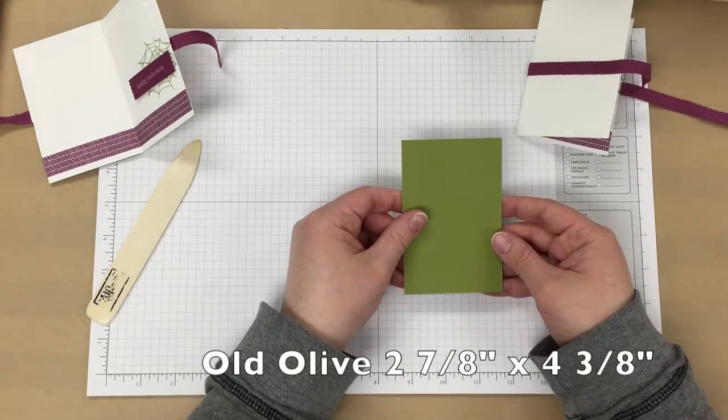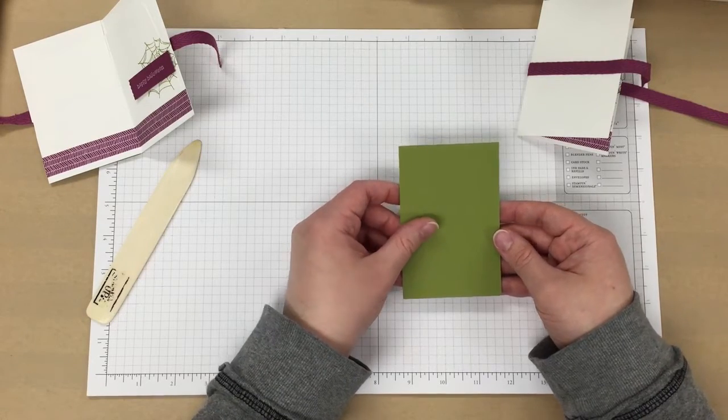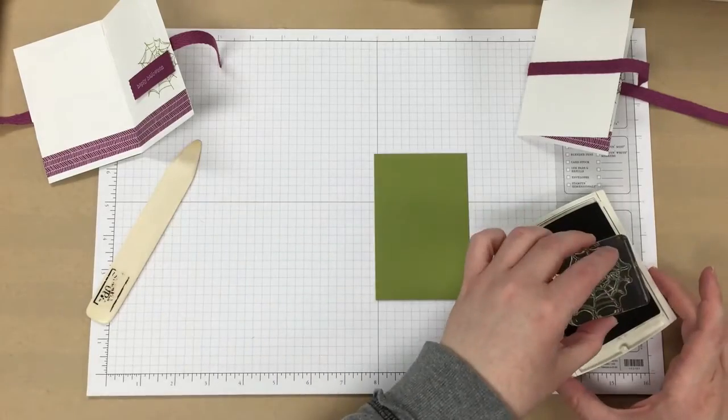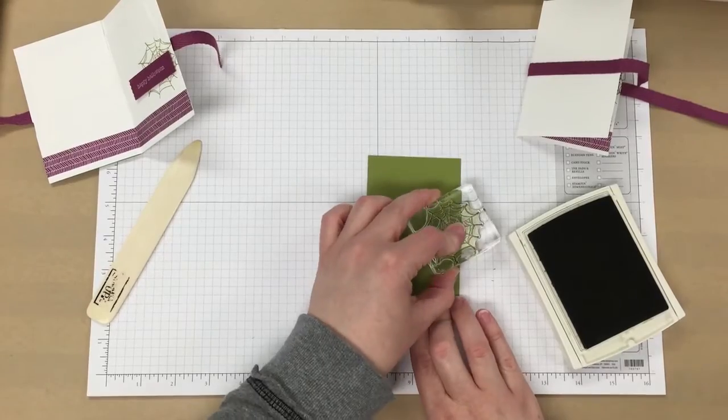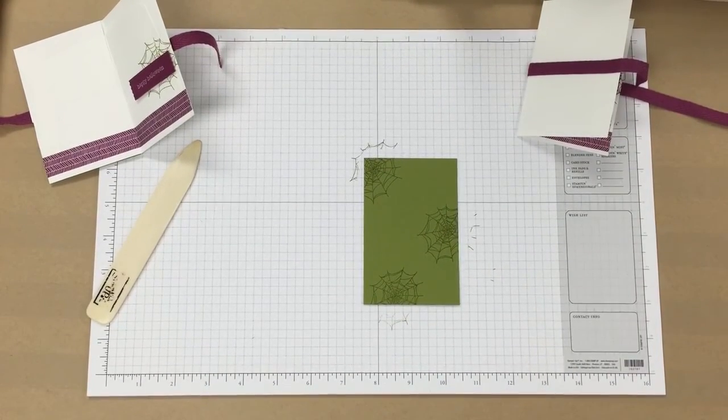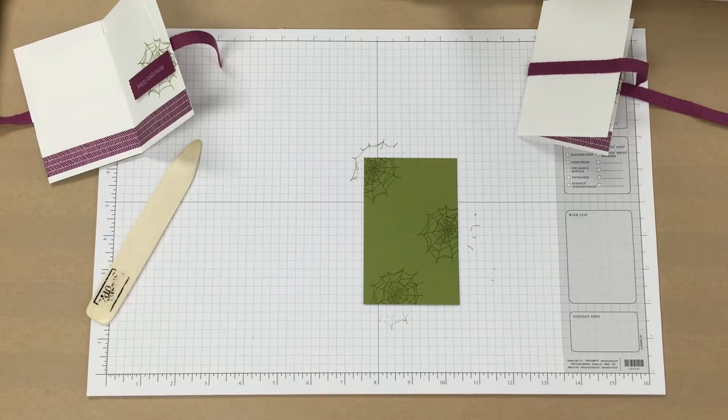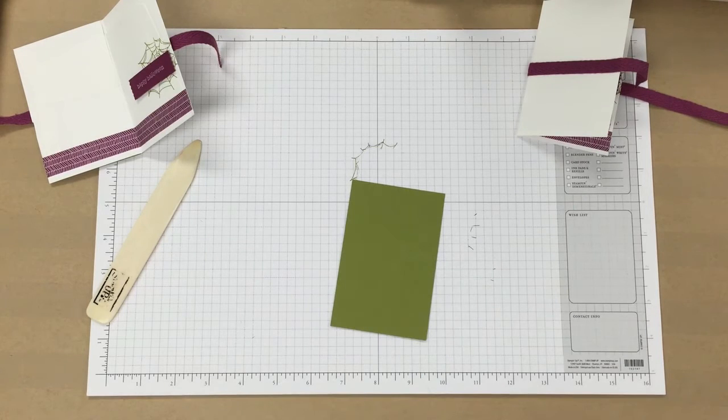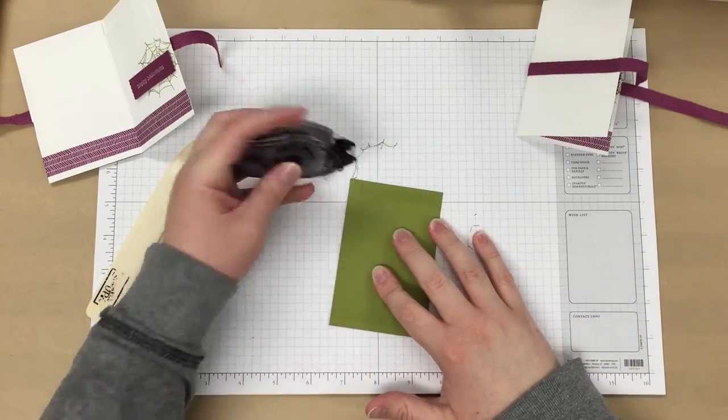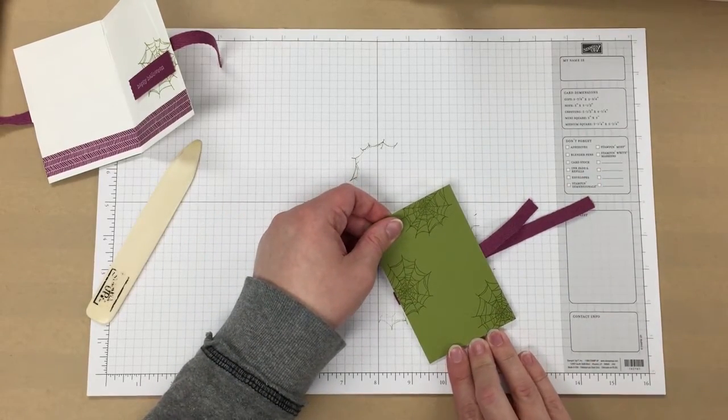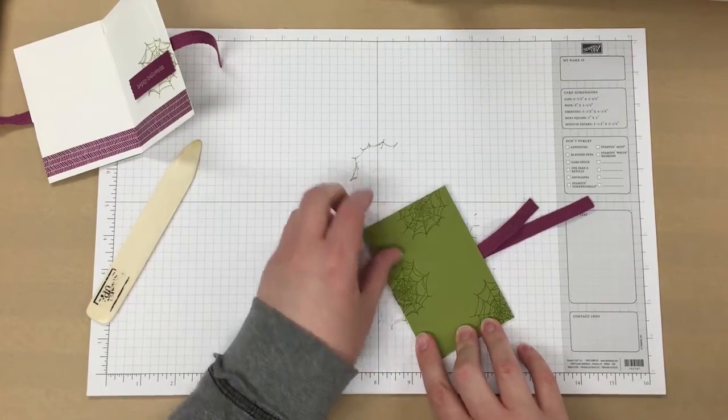You need a piece of old olive cardstock, and this is going to be two and seven-eighths by four and three-eighths. We're going to take that spiderweb image again from the witches night stamp set and the old olive ink. We're just going to stamp a little bit random, just three or four times is good, like that. Then we will just adhere that. You might want to use tear tape on this, but just for this video I'm going to use a little bit of snail, and then you'll just line that up with the envelope like so.